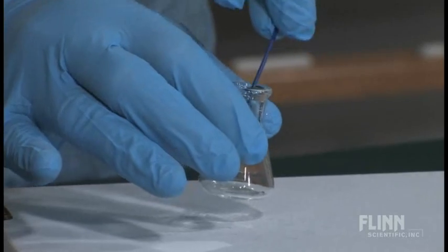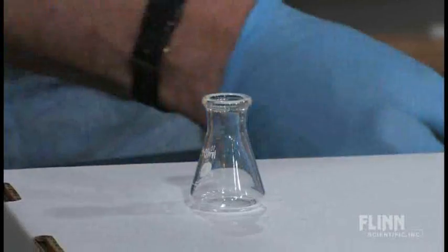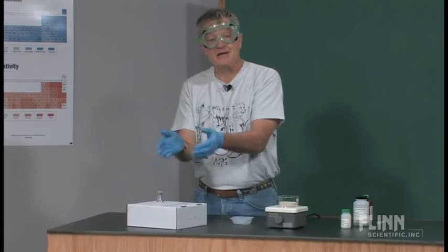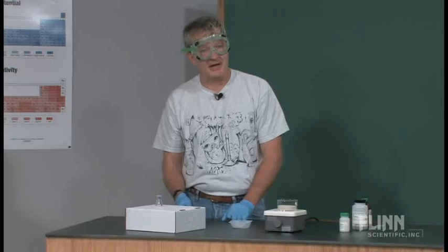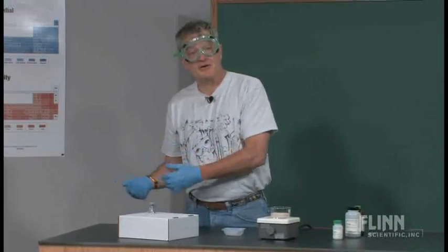I'm simply going to transfer it into this 10-milliliter flask that I have over here and drop it in. So I'm going to dump that in like so. Students would have massed that material ahead of time, so now we would know the mass of manganese that we've placed inside the flask, and that would be one of the pieces of information we would use eventually to calculate the empirical formula.